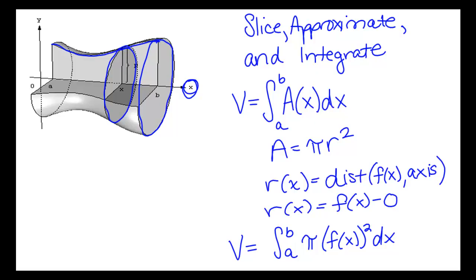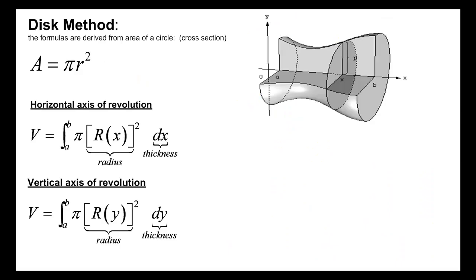Note that we could actually do this even around another axis — we would just have to subtract whatever number that is. We also could do the disk method if we were revolving around the y-axis, or around another vertical line.